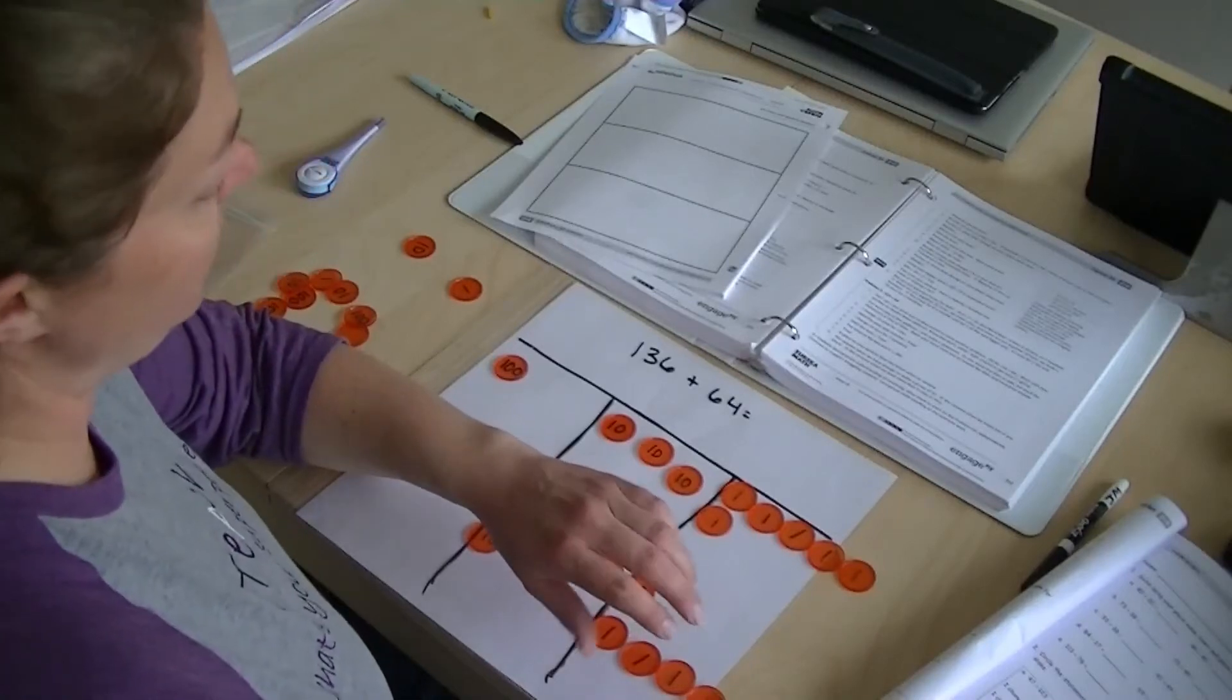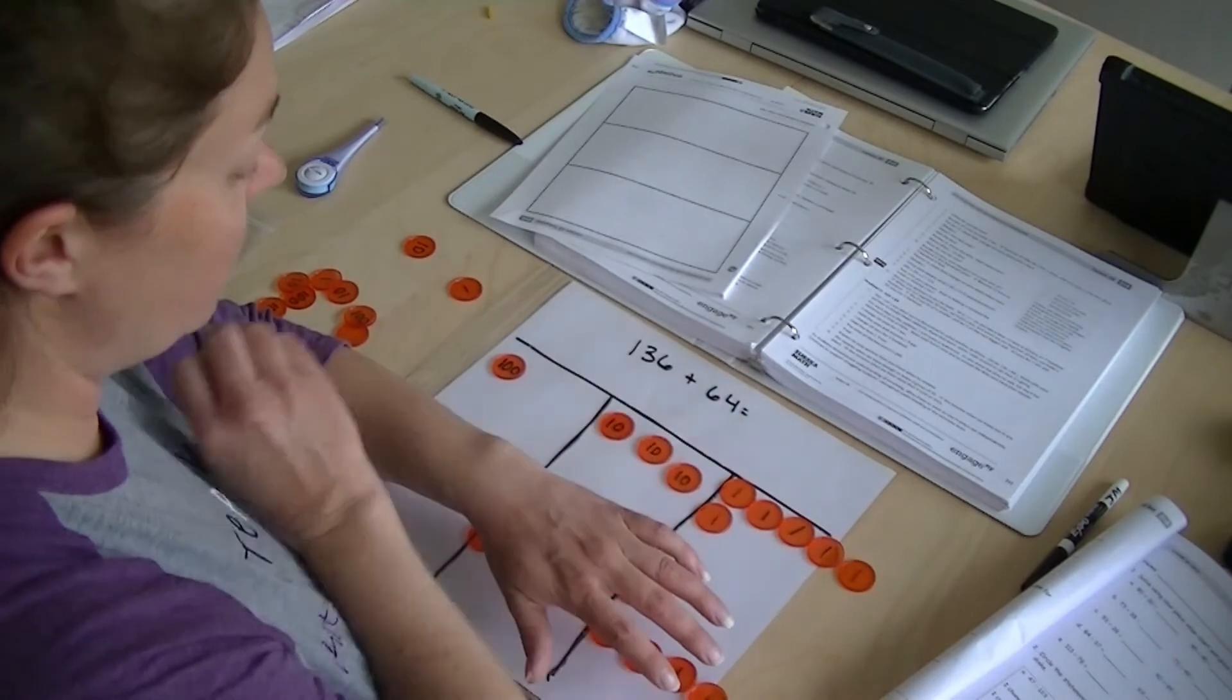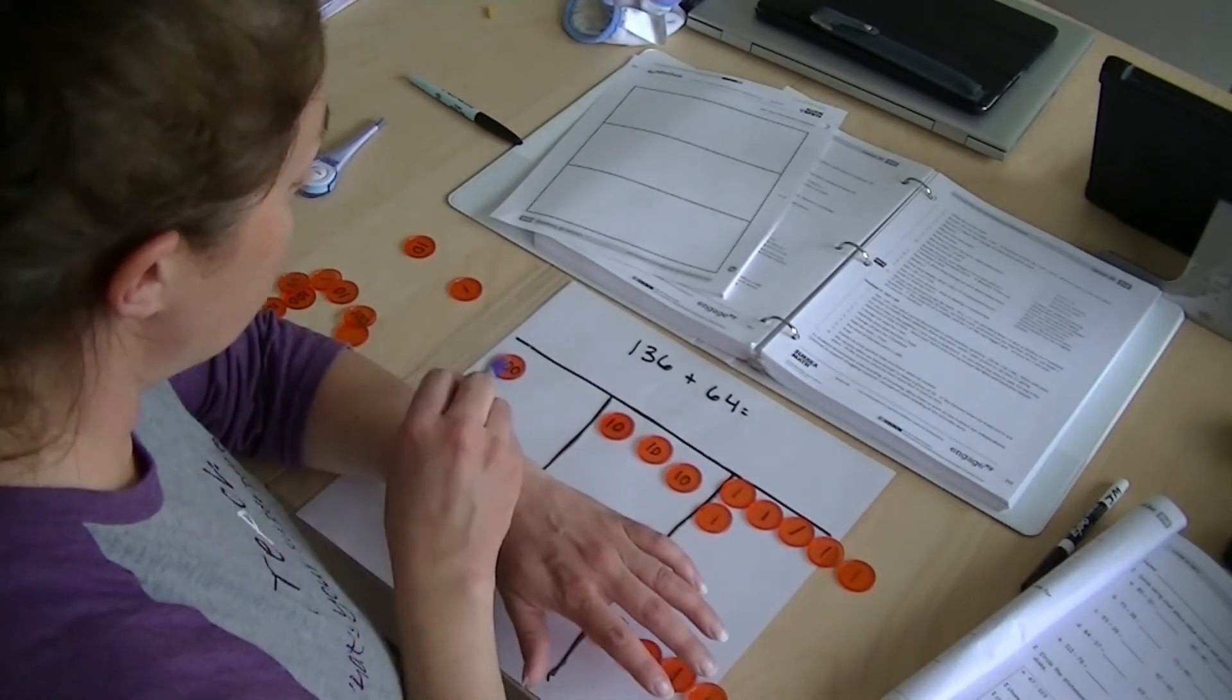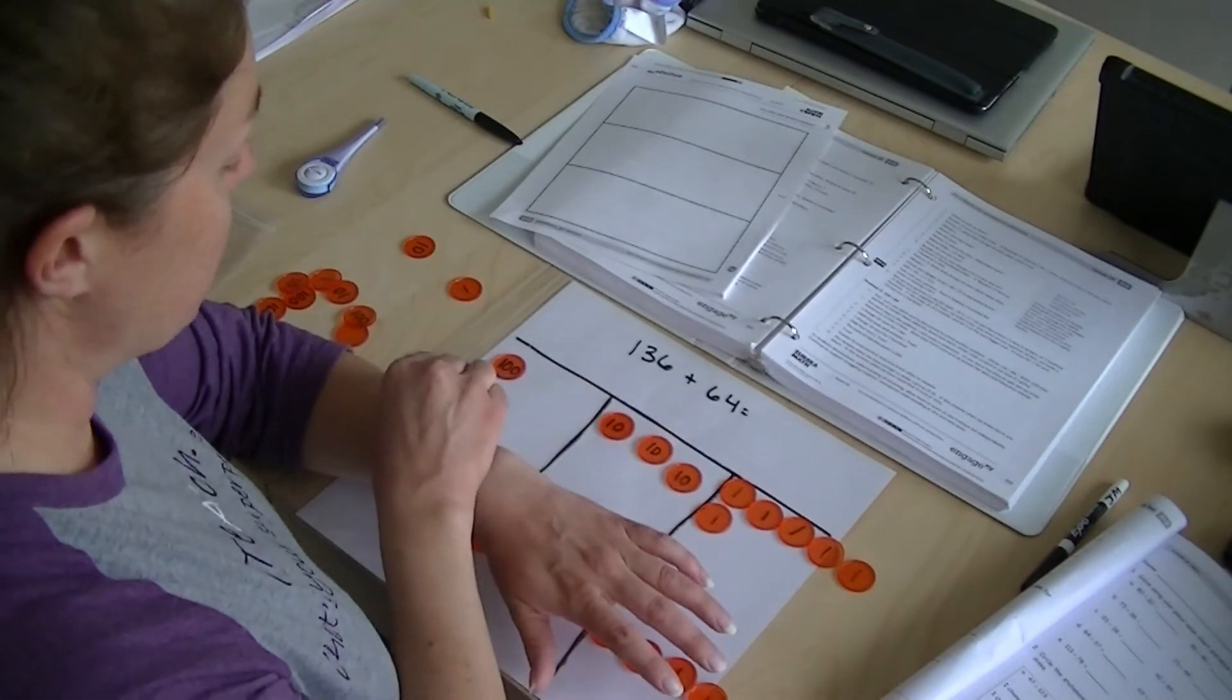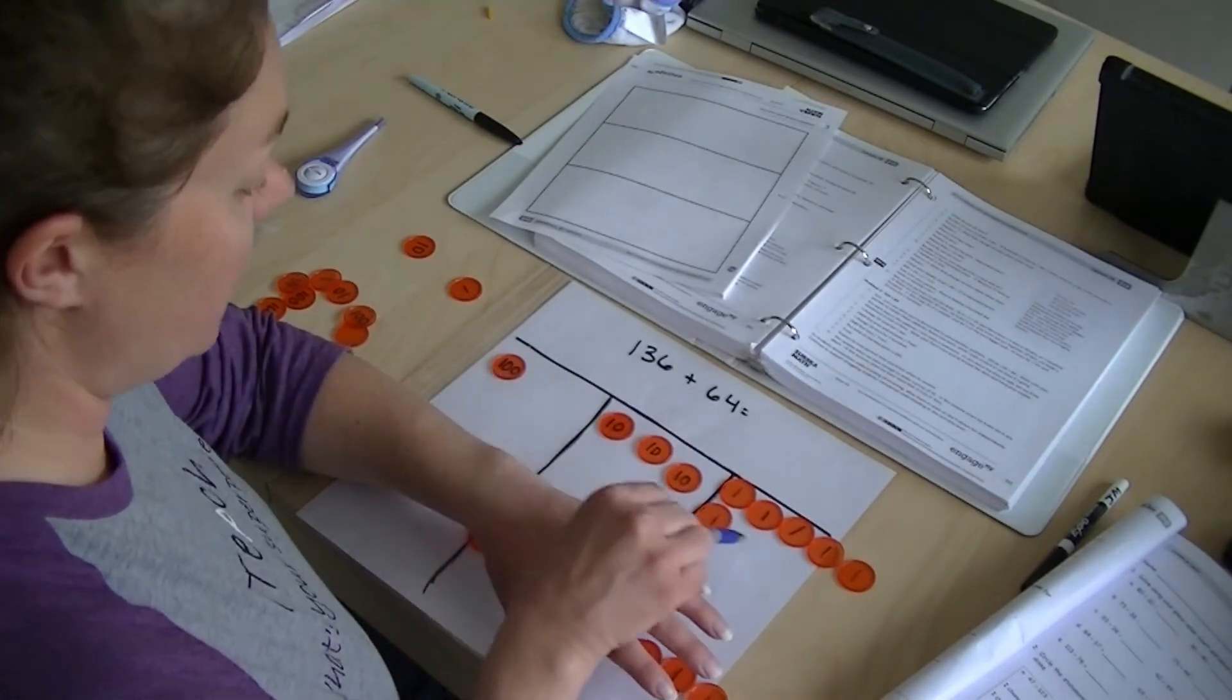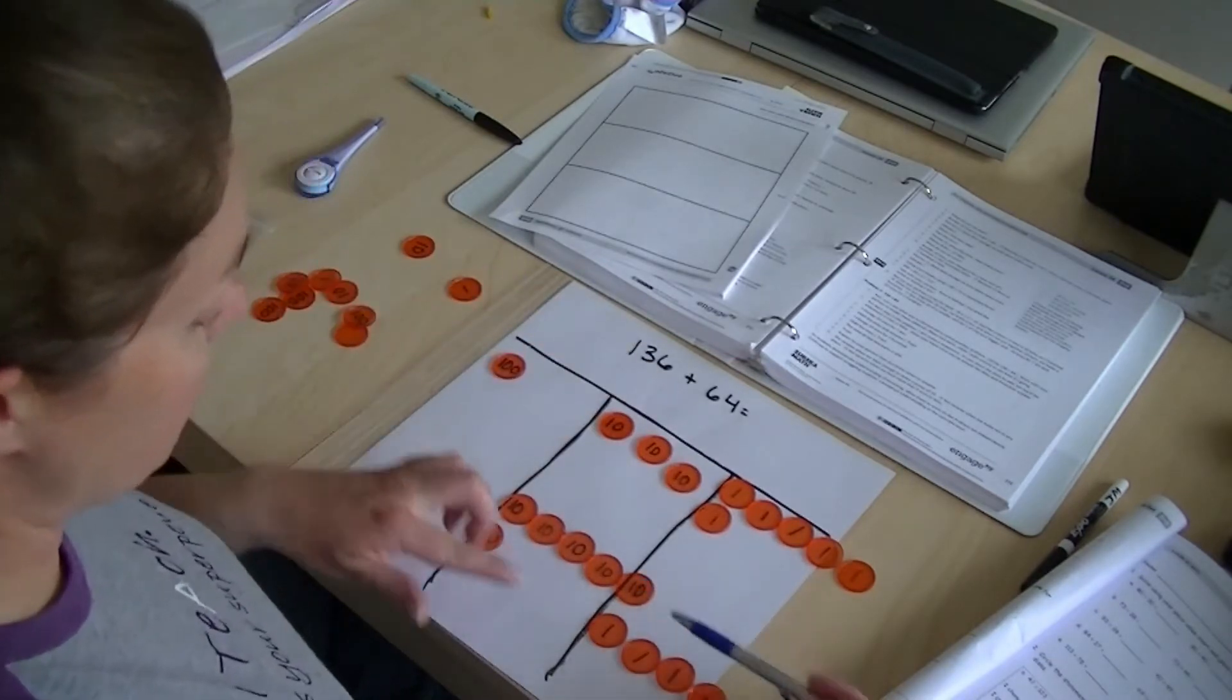Okay, as promised here is our adding with hundreds. So I have 136 plus 64. I've represented it here, 136, and then I'm adding my 64.